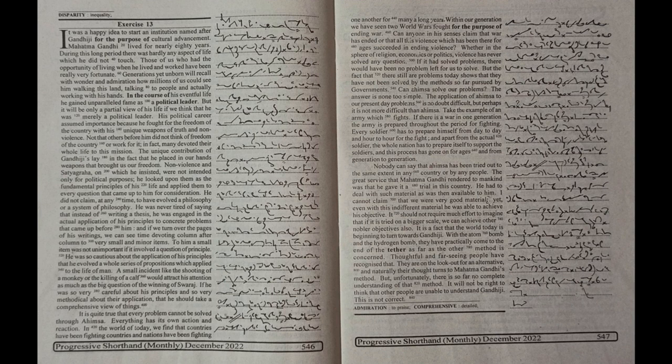It should not require much effort to imagine that if it is tried on a bigger scale, we can achieve other nobler objectives also. It is a fact that the world today is beginning to turn towards Gandhiji. With the atom bomb and the hydrogen bomb, they have practically come to the end of tether as far as the other method is concerned. Thoughtful and far-seeing people have recognized that they are on the lookout for an alternative and naturally their thought turns to Mahatma Gandhi's method. But unfortunately, there is so far no complete understanding of that method.